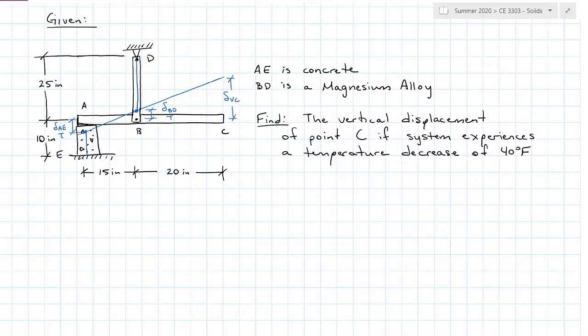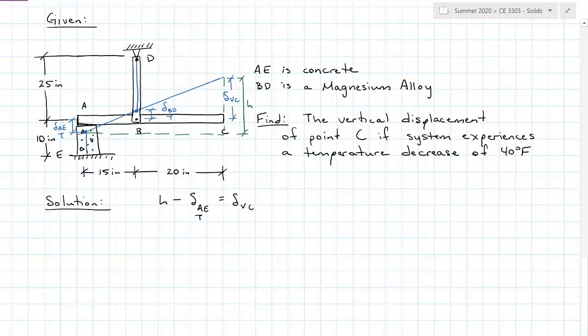One way to solve this problem is to take this entire triangle with that 35 inch width, and we have what I'm calling H here for height. We see from what I've drawn that if we take the height and subtract that deflection AE due to temperature, we will have the deflection vertically of point C. I still have a lot of unknowns though.